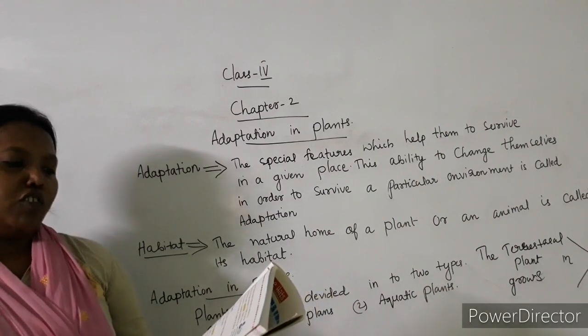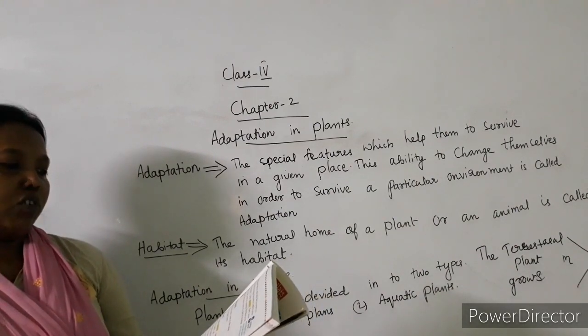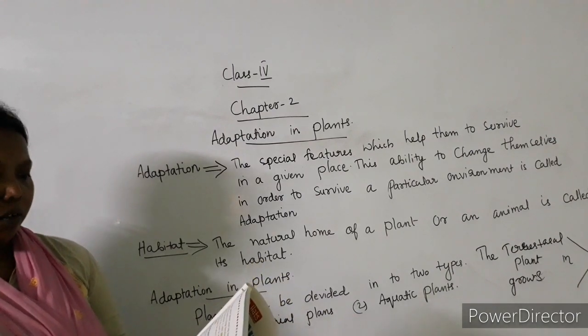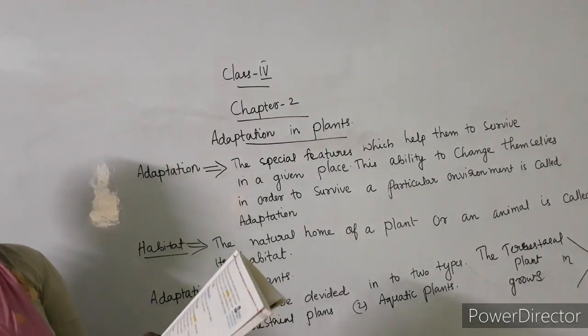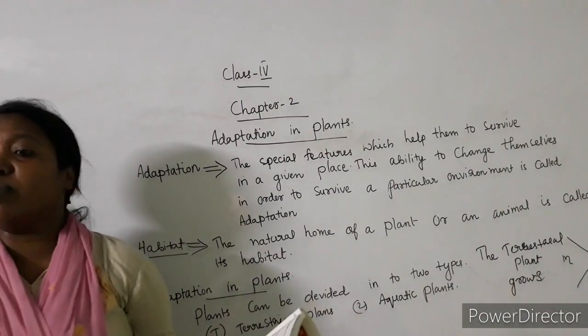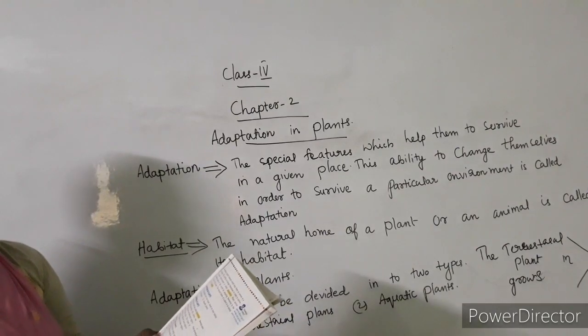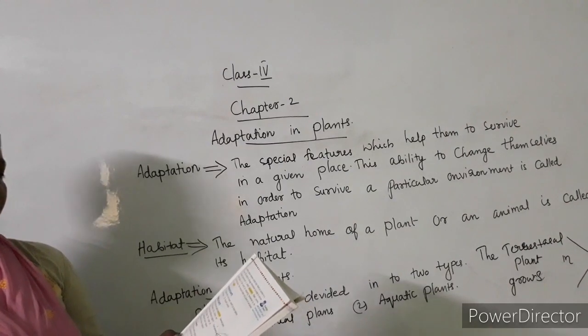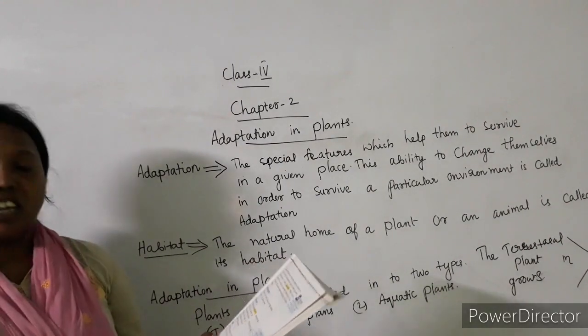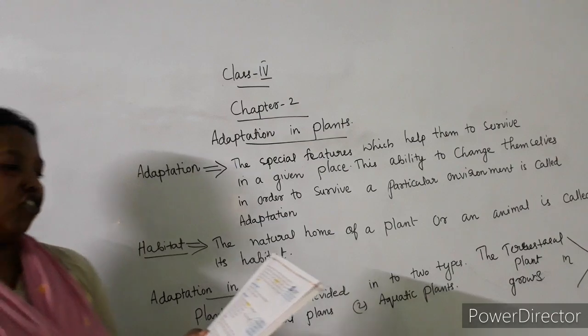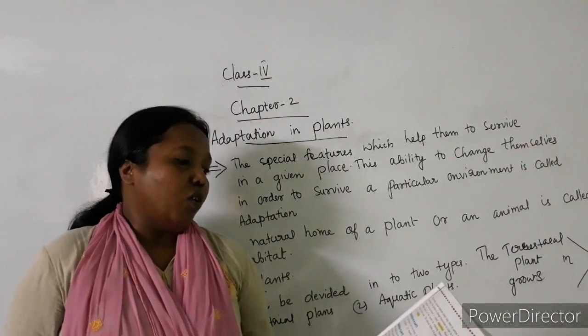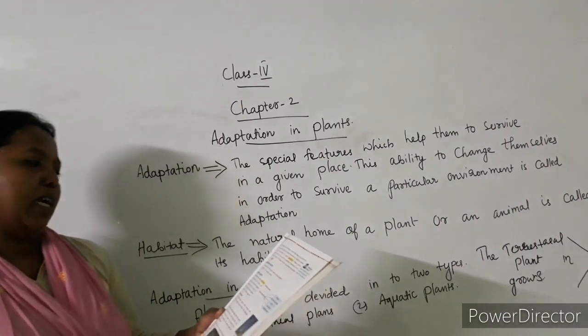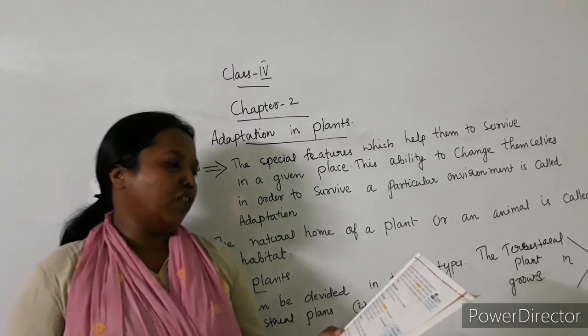In the desert, the desert is very hot, dry and sandy region which receives very little or no rainfall. There is no rainfall here, the water is very scarce. Plants growing in desert show the following adaptations.